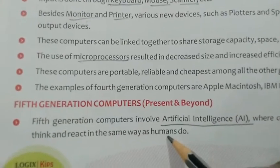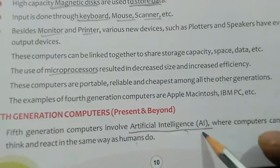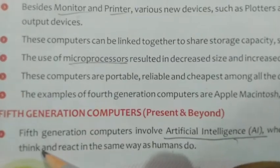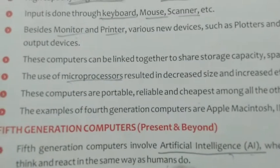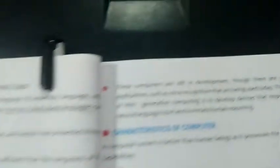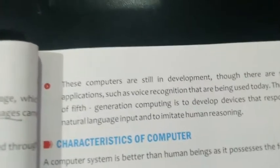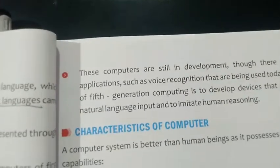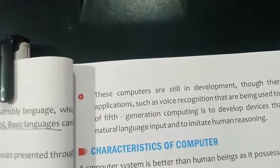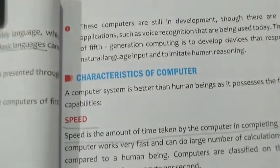In the fifth generation, marked by the development of artificial intelligence — or AI — computers can behave, think, and react the same way as humans do. Fifth generation computers are still in the development stage. We can also see the use of robots, which are being used in difficult situations and are a part of fifth generation computers.